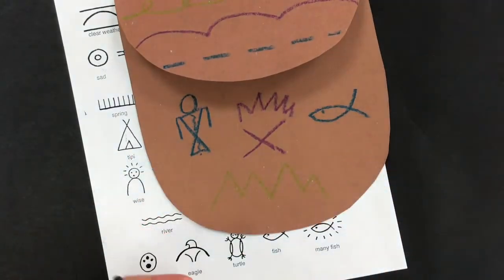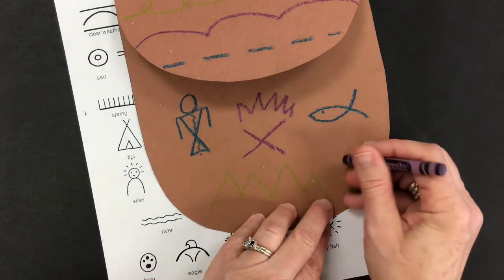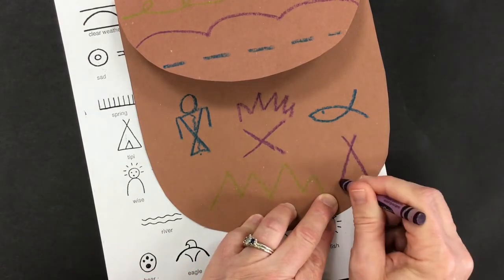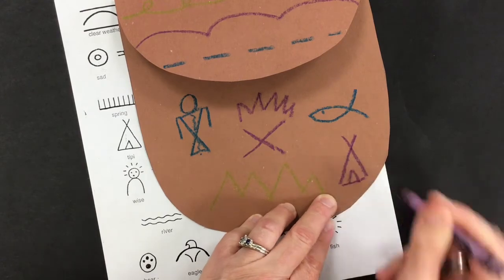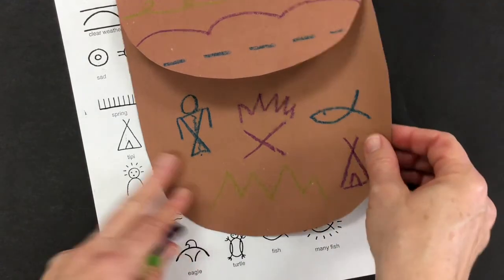And next I'm going to draw a teepee. A teepee is one type of house that one of the tribes of Native Americans used to sleep in and live in.